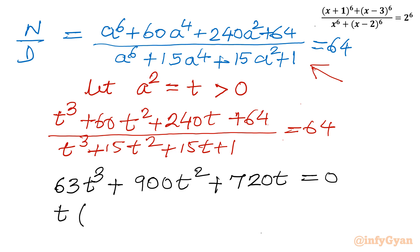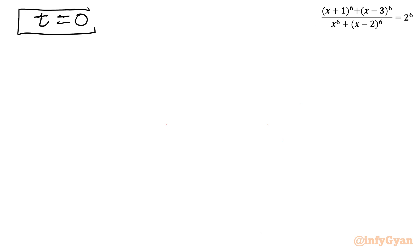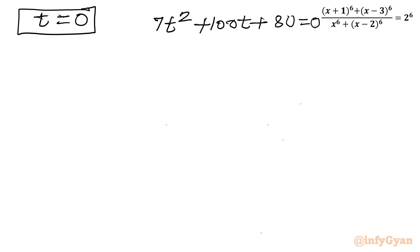Taking t common and dividing by 9, we get t(7t^2 + 100t + 80) = 0. By the zero product rule, either t = 0 or the quadratic 7t^2 + 100t + 80 = 0. Let us first check t = 0 as one result, then solve the quadratic to check for real solutions.